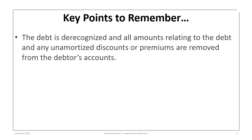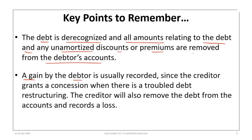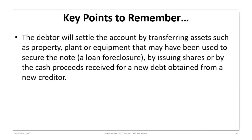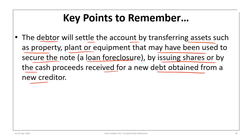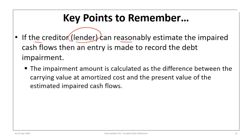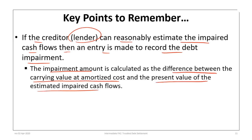Now for some key points to remember. First, when a debt is settled, the debt is de-recognized and all amounts relating to that debt, including any unamortized discounts or premiums, are removed from the debtor's accounts. A gain by the debtor is usually recorded — as was the case here for Flockhart — since the creditor grants a concession in a troubled debt restructuring. The creditor will also remove the debt from the accounts and record a loss. The debtor will settle the account by transferring an asset such as property, plant, or equipment — in our case, land — that may have been used to secure the note, or by issuing shares, or by cash proceeds from new debt obtained from the creditor. Finally, if the creditor can reasonably estimate the impaired cash flows, an entry is made to record the debt impairment, calculated as the difference between the carrying value at amortized cost and the present value of any estimated impaired cash flows.